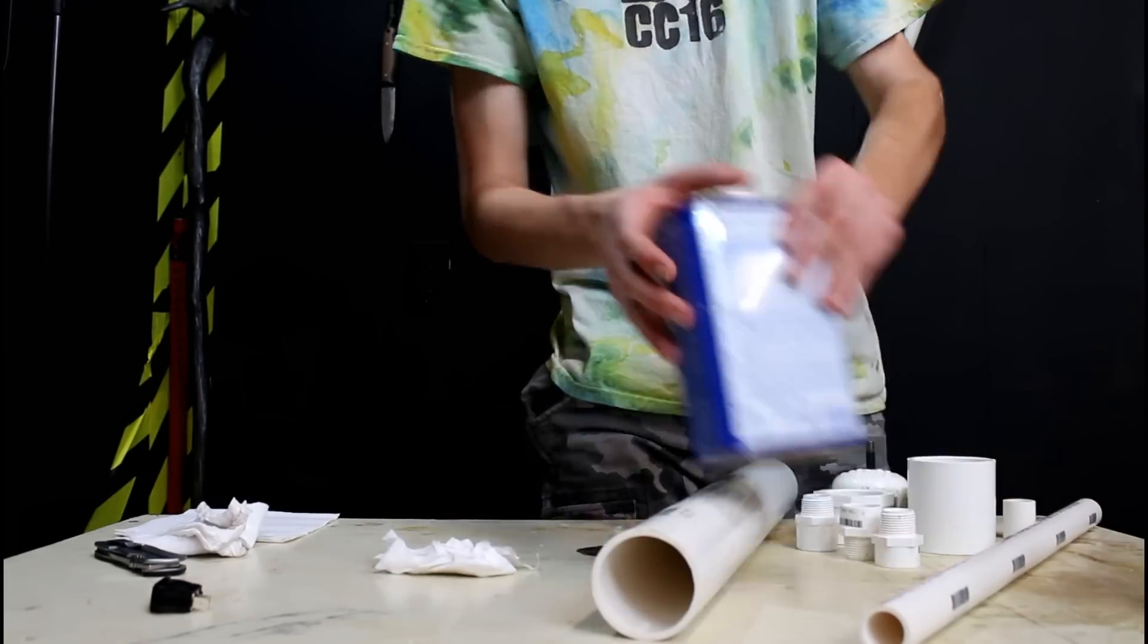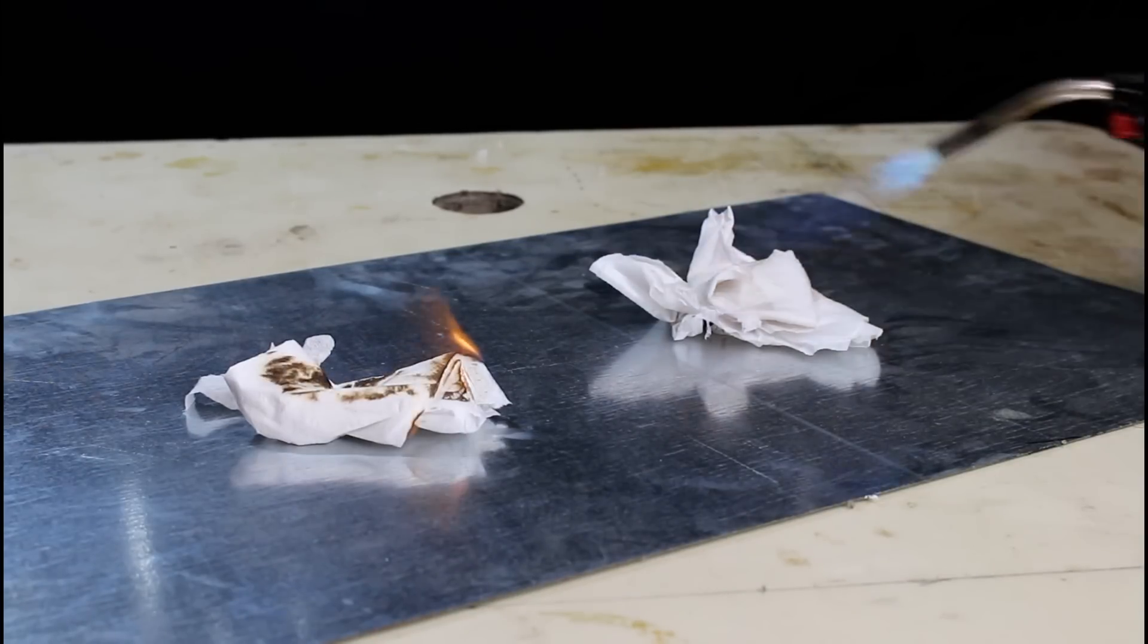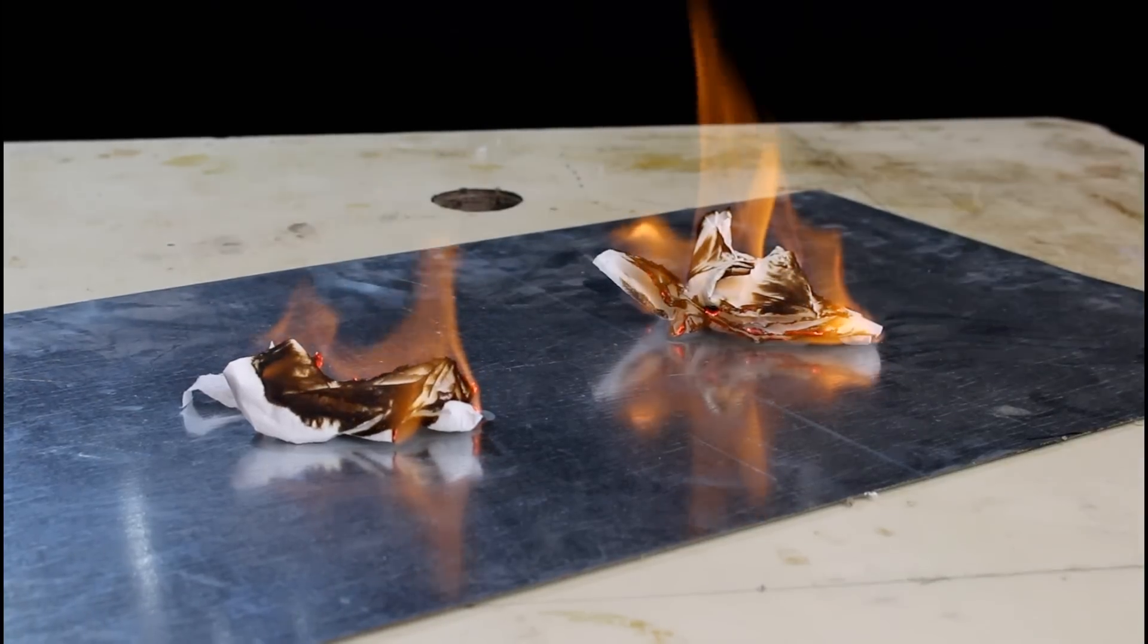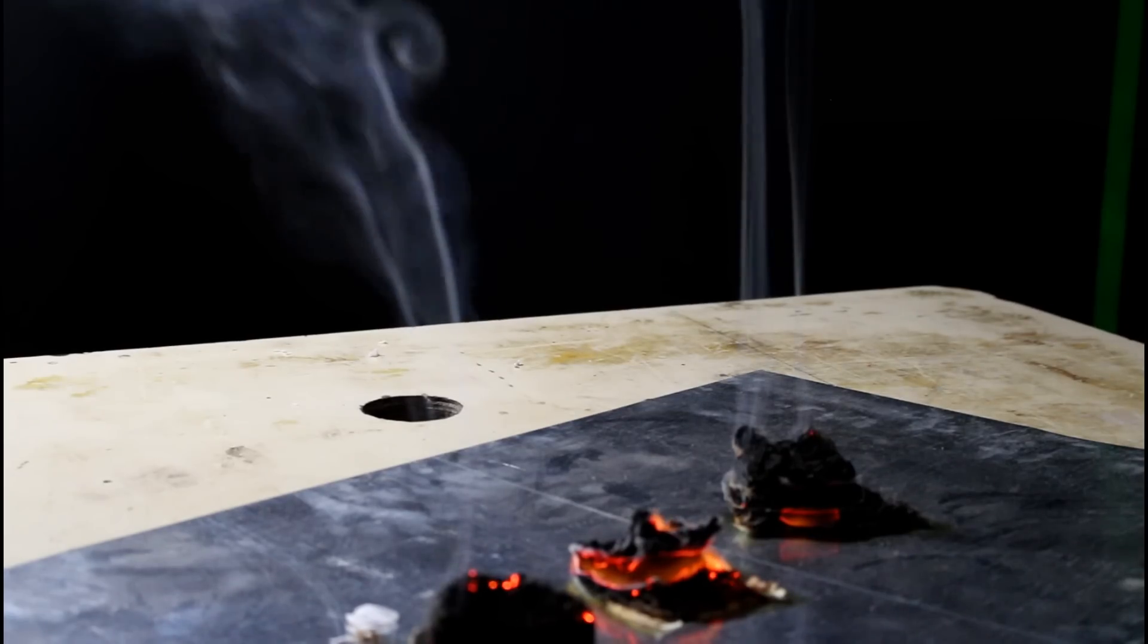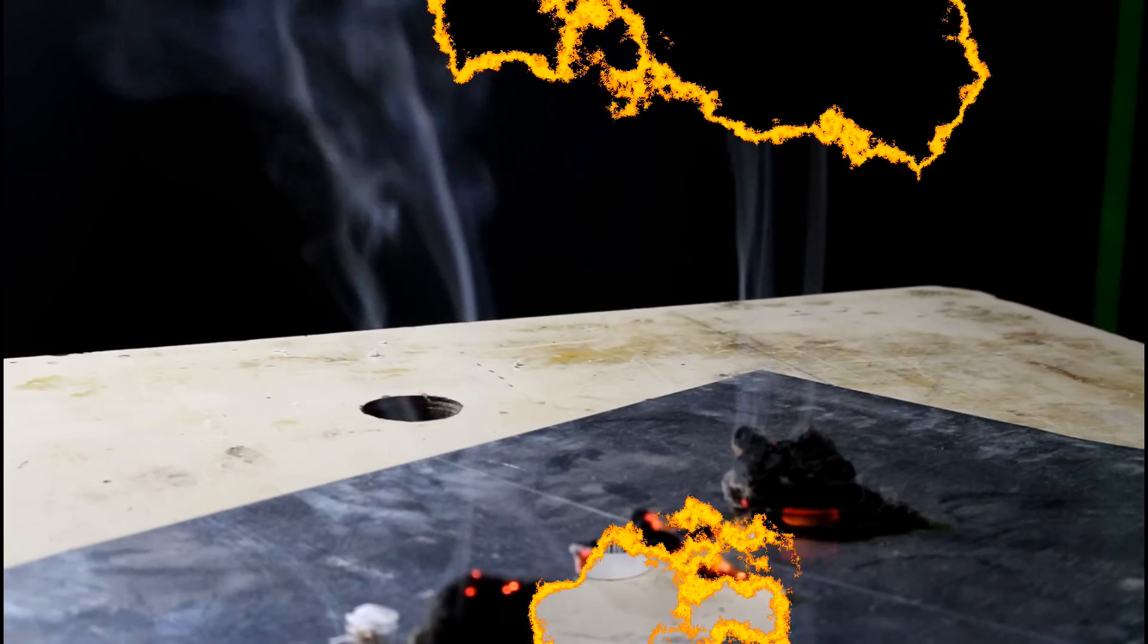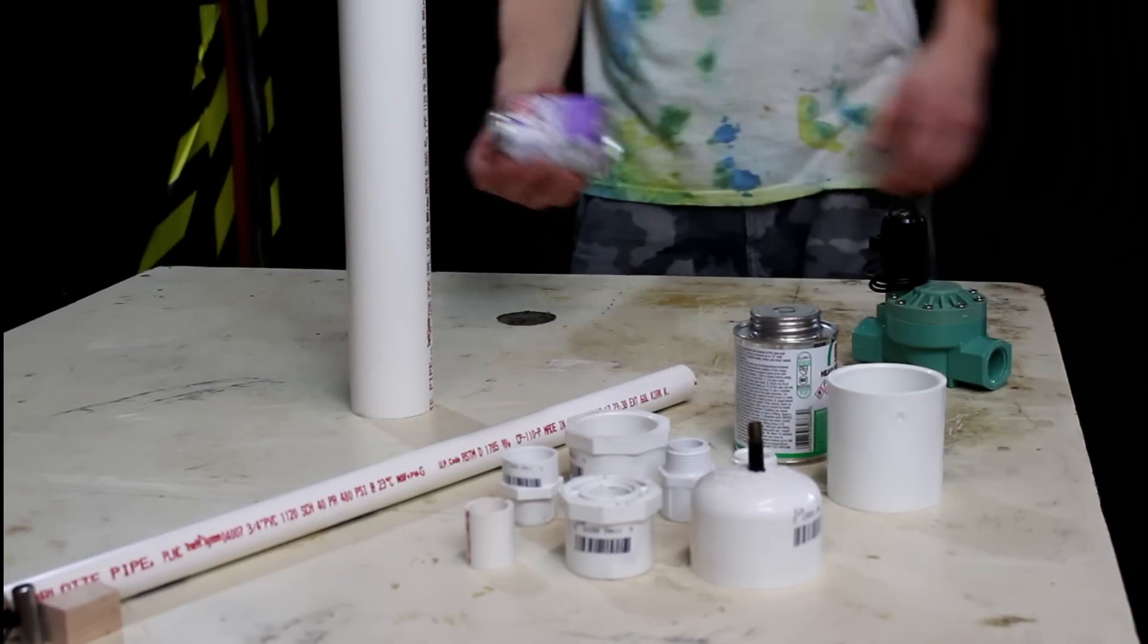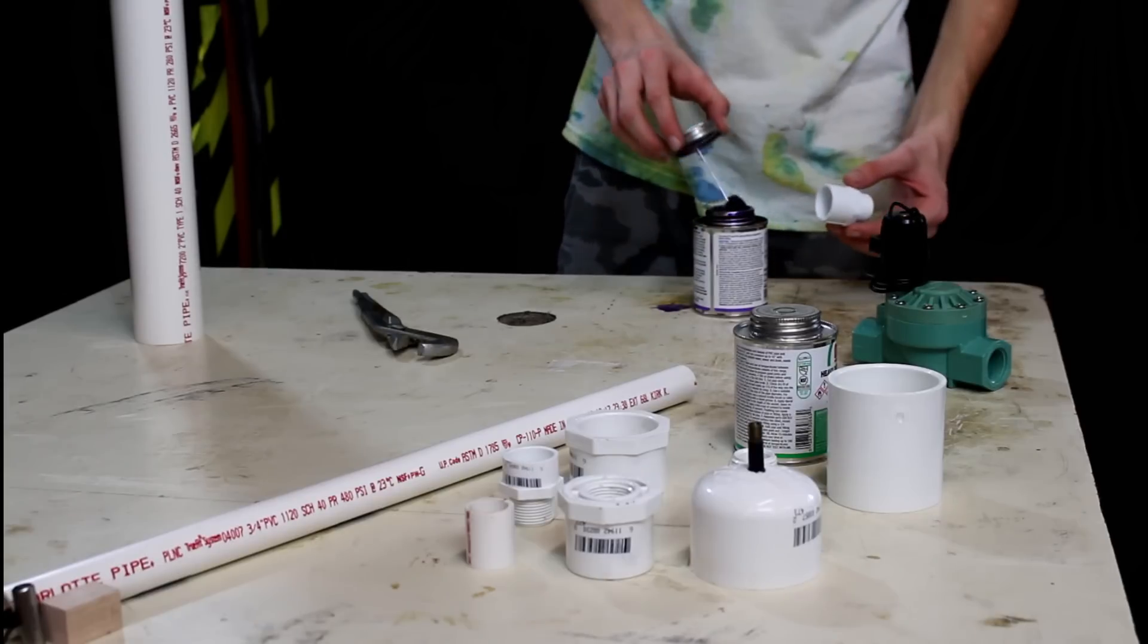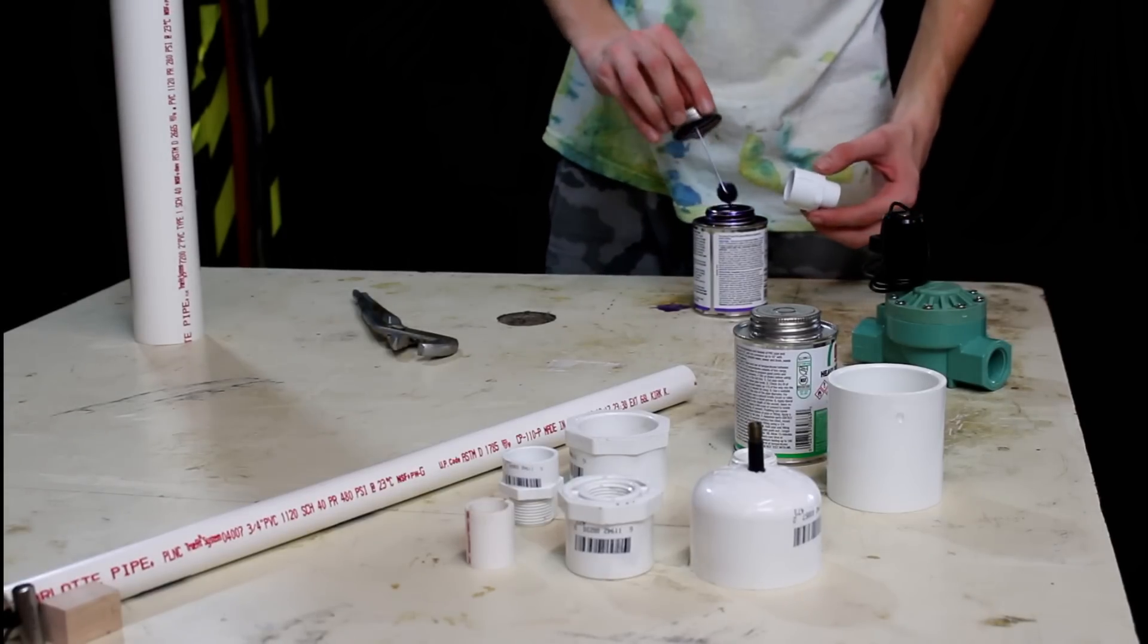Alright, there we go. There's only one way to dispose of napkins soaked in alcohol. First, I'm going to prime everything. Sorry about the noise, that's my fan.